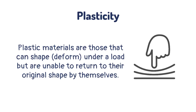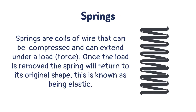Plastic materials are those that can change shape under a load but are unable to return to their original shape by themselves. Springs are coils of wire that can be compressed and can extend under a load. Once the load is removed, the spring will return to its original shape. This is known as being elastic.